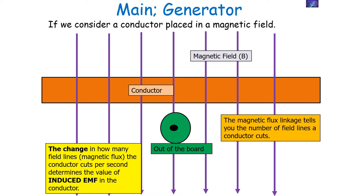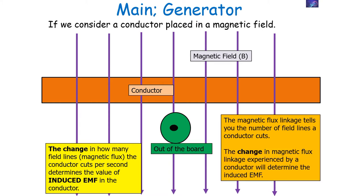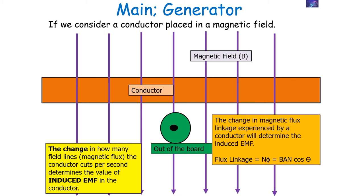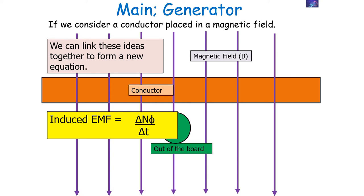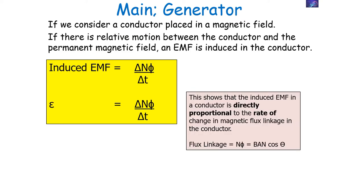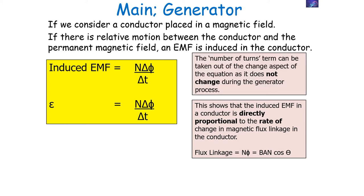The magnetic flux linkage tells you the number of field lines a conductor cuts, and the change in magnetic flux linkage determines the induced EMF. We can link these ideas in a new equation: the induced EMF equals the change in flux linkage over time, or delta N phi over delta T. This indicates that the induced EMF in a conductor is directly proportional to the rate of change of magnetic flux linkage. Because the number of turns doesn't change during the process, we can move N outside the delta, writing it as N delta phi over delta T.